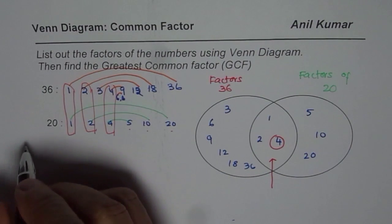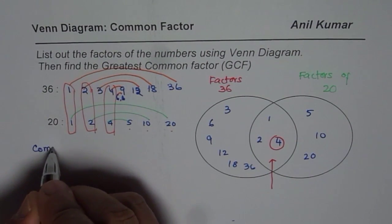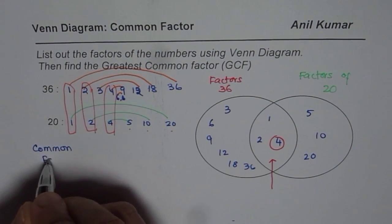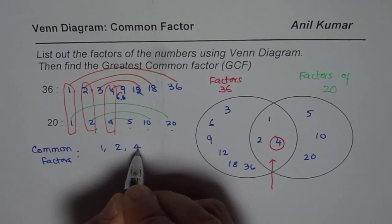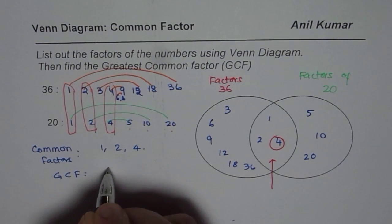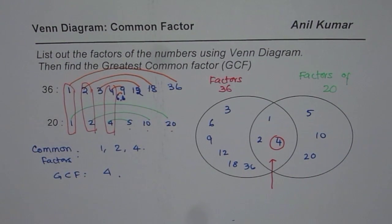So let us write down common factors first. So we have common factors as 1, 2, and 4. And the greatest common factor is 4 for us. So that is how we can find the greatest common factor using Venn Diagram. I hope that helps. Thank you.